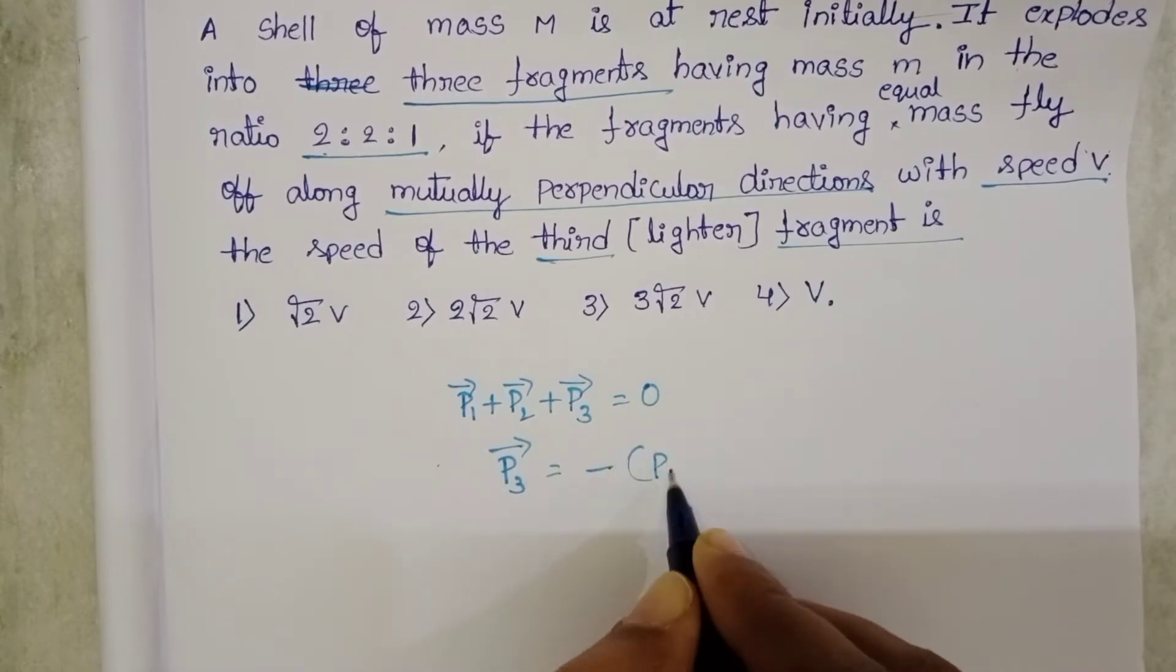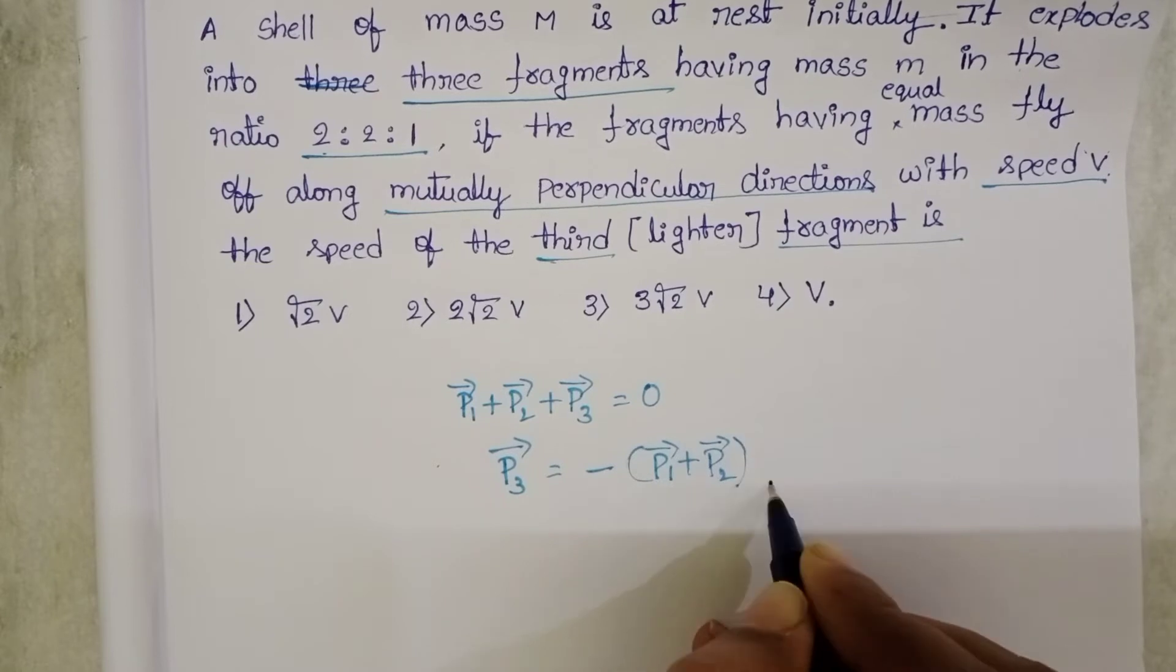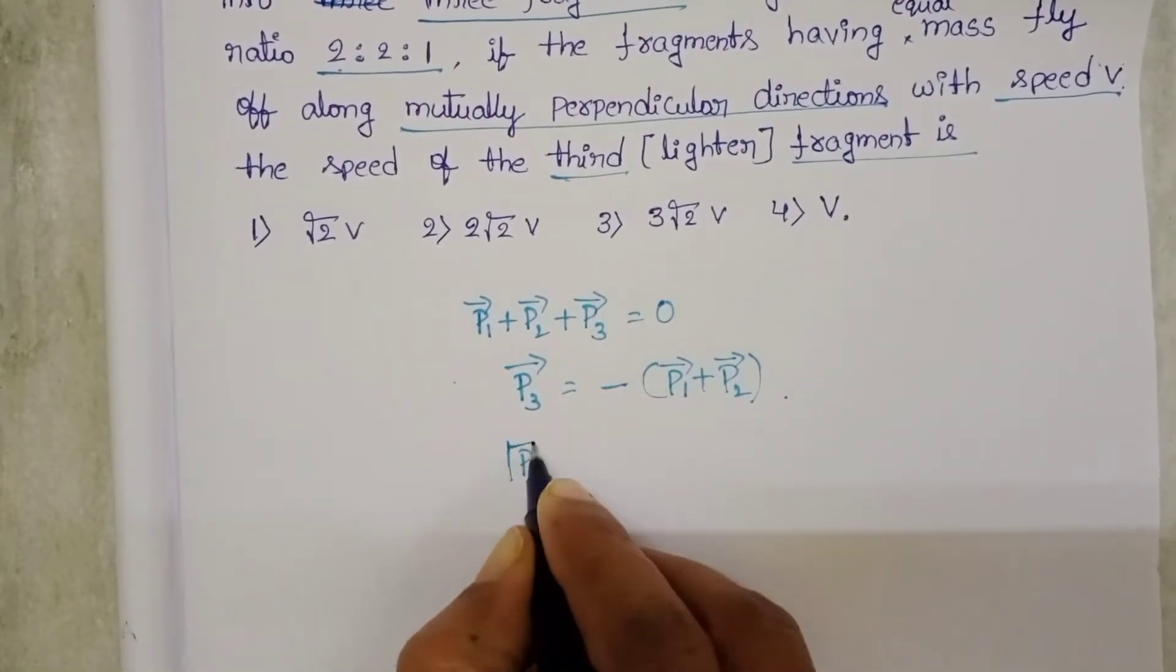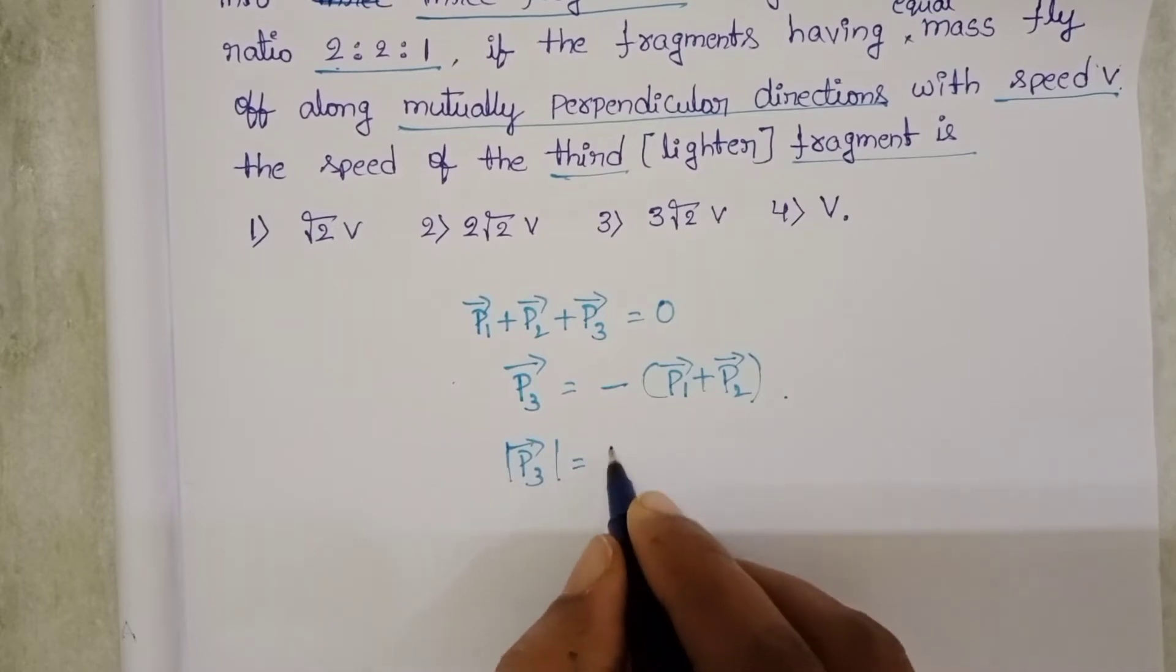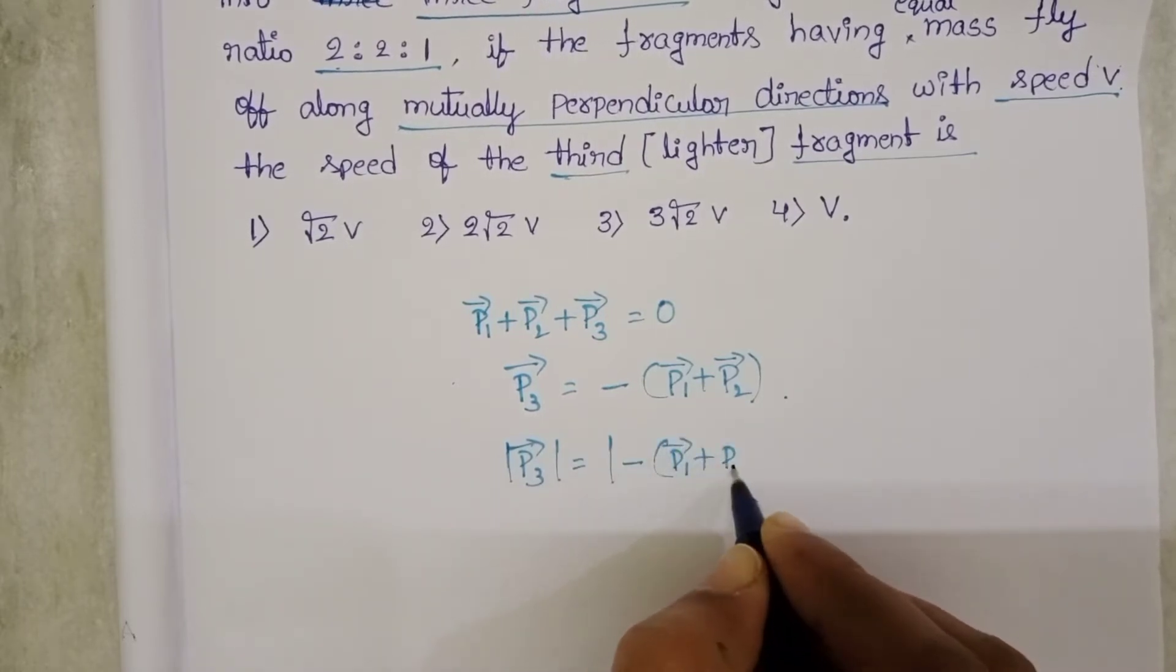P3 bar is equals to minus of P1 bar plus P2 bar. And directly take the magnitude. Mod P3 bar is equals to mod of minus P1 bar plus P2 bar.